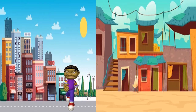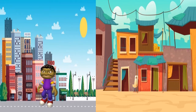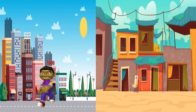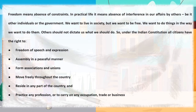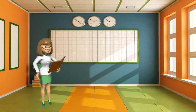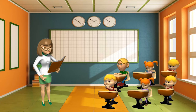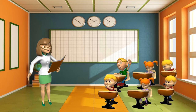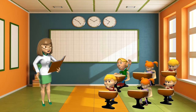The second most important right of the constitution is the right to freedom. This right allows a person to do freely whatever they want without causing any damage to others — no other person can interfere in someone else's matter. Under this category, common people have the right to freedom of speech and expression, assembly in a peaceful manner, form associations and unions, move freely throughout the country, reside in any part of the country, and practice any profession or carry any occupation. Every citizen has these freedoms, but you cannot exercise them in a way that violates others' rights. The government can implement reasonable restrictions for the larger interest of society.